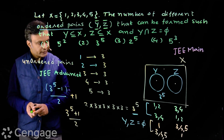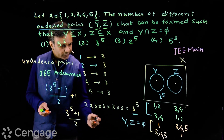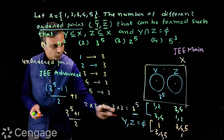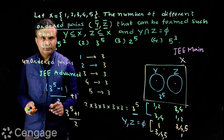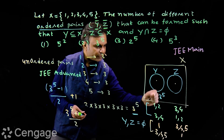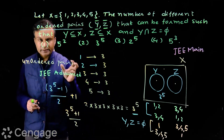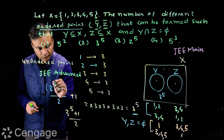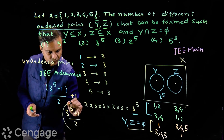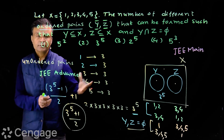So the number of unordered pairs is (3^5 + 1) / 2. In ordered pairs, the two cases where Y has elements {1,2} and Z has {3,4}, versus Y has {3,4} and Z has {1,2}, are different. But in unordered pairs, these two cases are the same, so we divide by 2 and then add 1. Therefore, we have (3^5 + 1)/2 unordered pairs. These words — ordered vs unordered — are very important; if you don't consider this distinction, the answer will be wrong.